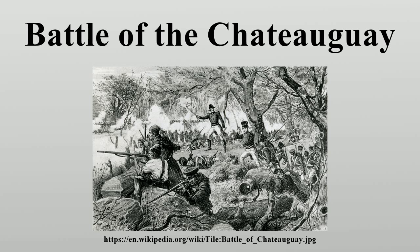Also, water on this route was short after a summer drought had caused the wells and streams to dry up, though this excuse caused some amusement among Hampton's officers as Hampton was known to be fond of drink. Hampton's force marched west instead to Four Corners on the Châteauguay River. As Wilkinson's expedition was not ready, Hampton's force waited at Four Corners until 18 October, as Hampton was concerned that the delay was depleting his supplies and giving the British time to muster forces against him.